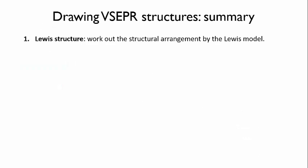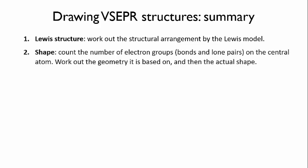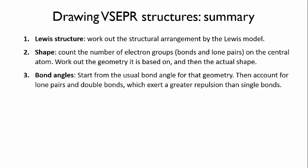So let's summarize. When you're drawing a VSEPR structure, first of all, draw out its Lewis structure. That's really important. Secondly, work out its shape. Count the number of electron groups, bonds, and lone pairs on the central atom. Work out the geometry that it's based on, and then the actual shape. And then finally, if you can, work out the bond angles. Start from the usual bond angle for that geometry, and then account for lone pairs and double bonds, which exert a greater repulsion than single bonds.